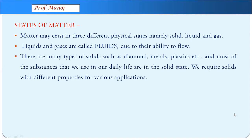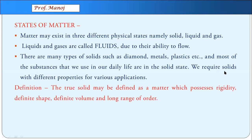We are going to focus about solids. The examples given are diamond, metals, plastics, etc. Although they are all solids, they are not of the same type — each has its own characteristics. A true solid is defined as that type of matter which has: number one, rigidity; number two, definite shape; number three, definite volume; and number four, long range order.